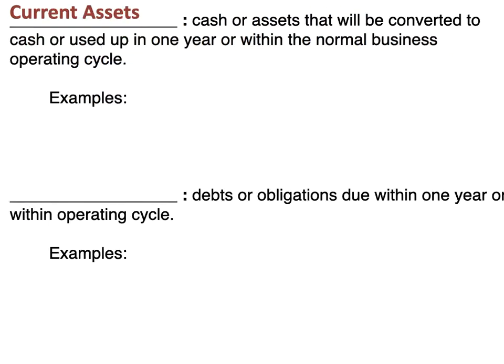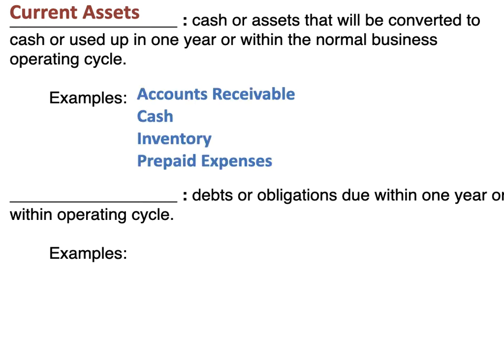Let's put these in your notes. Current assets are cash or assets that will be converted to cash or used up in one year or within the normal business operating cycle. Some examples of current assets would be accounts receivable, cash, inventory, and prepaid expenses — those are just four of many.